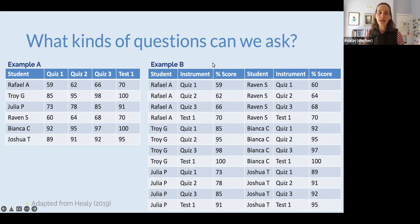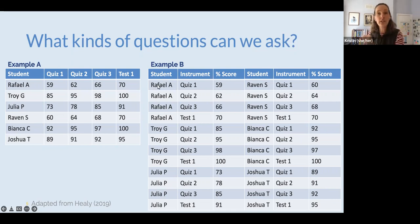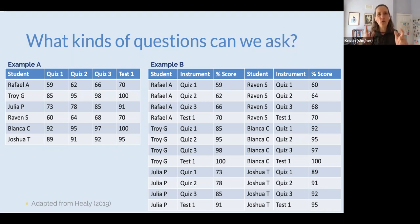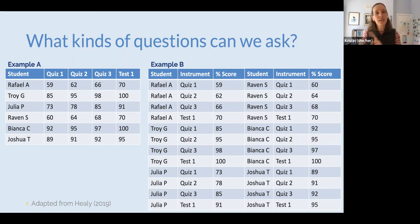Pause the video and think for a second: when the data are organized in Example A format, what are some questions that come to mind that you can easily answer? And then do that for Example B as well — what are some questions you can answer or ask of the data organized in that way? Either by visually looking at it or by thinking about how you'd get it to make a graph in Google Sheets or Excel to answer your questions.